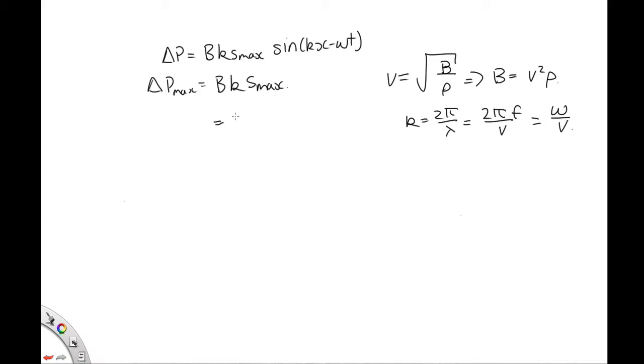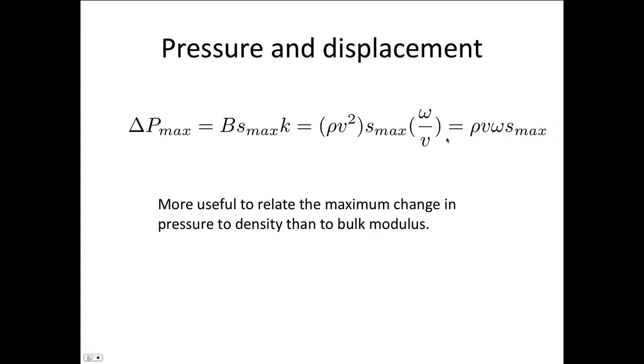So let's make these replacements. We've got v squared rho times omega over v times s max. These v's cancel, and we end up with v rho omega s max is equal to the maximum pressure differential. The reason for doing this is just that the density, the velocity, and the angular frequency of the sound wave are easier to measure than the bulk modulus.